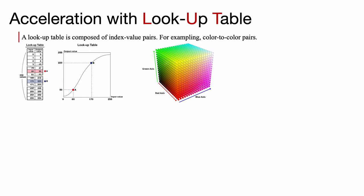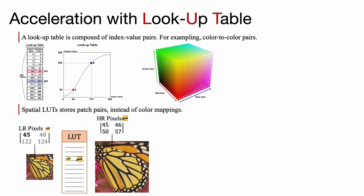Next, we present an efficient implementation, where the inference of the learned neural network is accelerated with lookup tables. A lookup table is composed of index value pairs, which can be efficiently retrieved through memory access. It is widely applied in the image signal processing pipeline for saving color-to-color mappings.